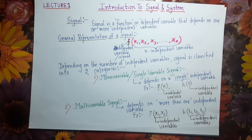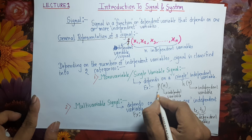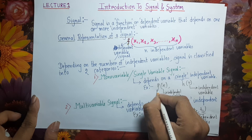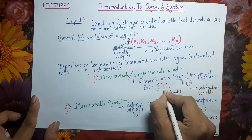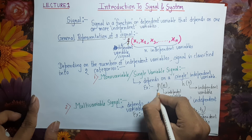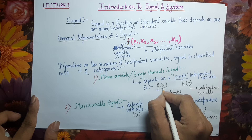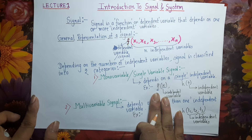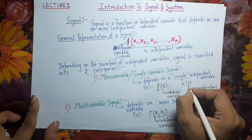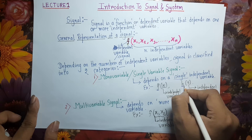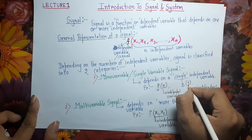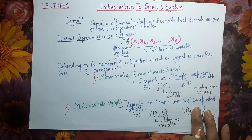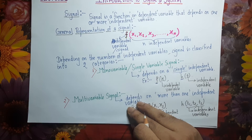For example, a signal F(X) — here F is the dependent variable and it varies with respect to a single independent variable X, so this is a mono-variable signal. Similarly, H(T) — the dependent variable H varies with respect to a single independent variable T — is also an example of a mono-variable or single-variable signal.